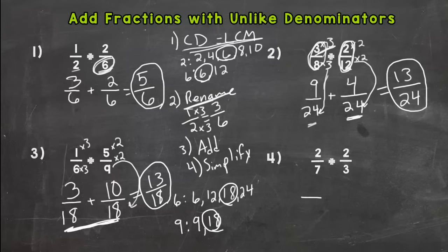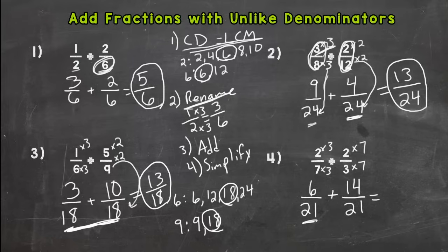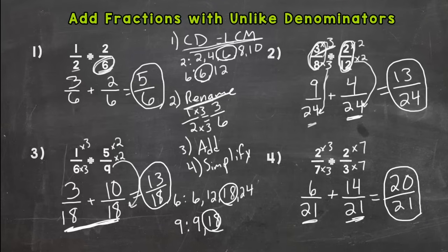Number four has denominators of seven and three. List your multiples to find where they meet first — they meet at 21. Step two: rename. Seven times three is 21, so two times three is six — giving us six twenty-firsts. Three times seven is 21, so two times seven is fourteen — giving us fourteen twenty-firsts. We have common denominators and renamed properly, so we add: six plus fourteen is twenty, denominator is 21. Twenty twenty-firsts is our answer.